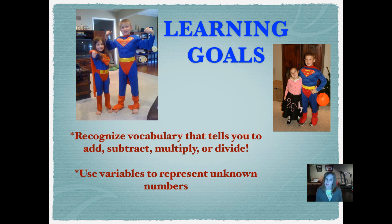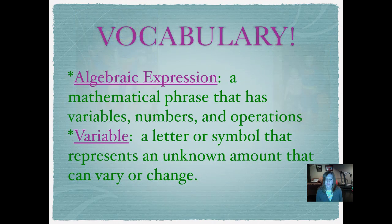We're also going to use variables to represent unknown numbers — and that's Bryson and Brayden. Bryson is Superman every year, so they're in their Halloween costumes there. Our vocabulary for today: the first one is algebraic expression. That's a mathematical phrase, just like an English phrase but in math, that has a variable, a number, and an operation.